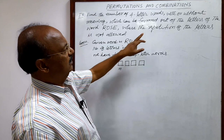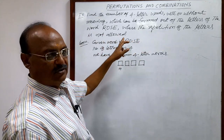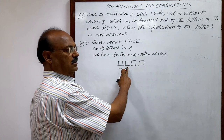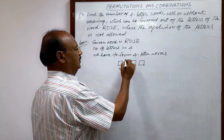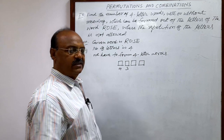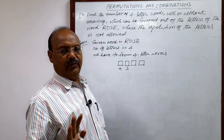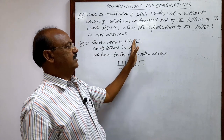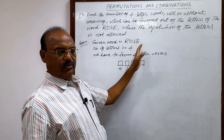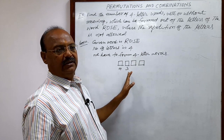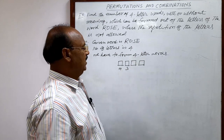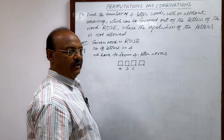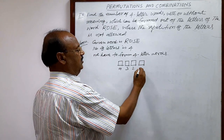The condition is that repetition of letters is not allowed. So for the second position, we can select letters in only three ways, because one has already been selected and the remaining letters are three. Similarly, for the third position we can select in two ways, and for the fourth position in only one way.